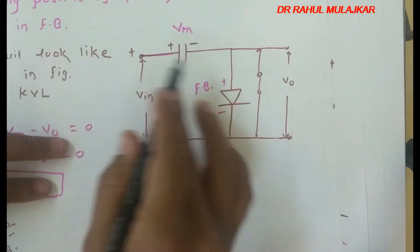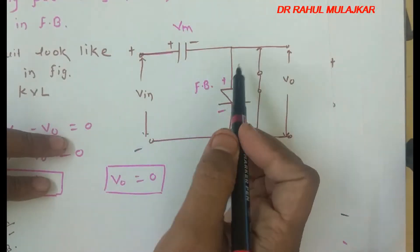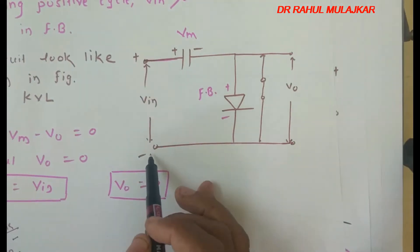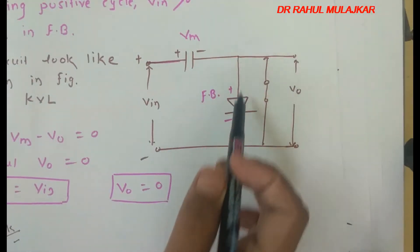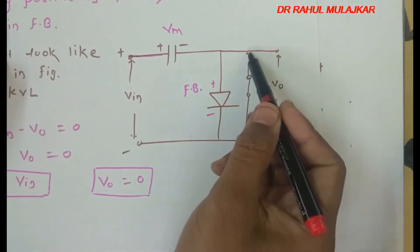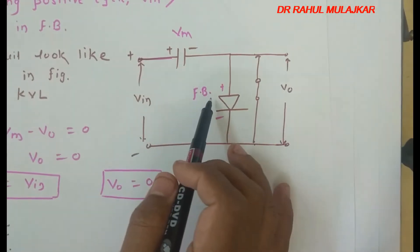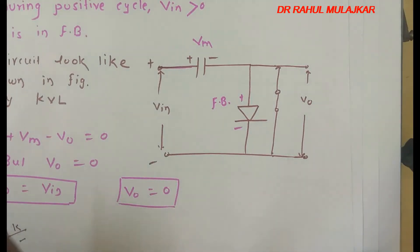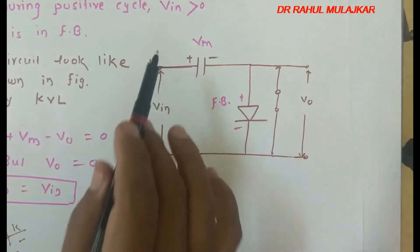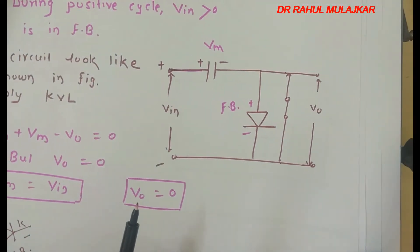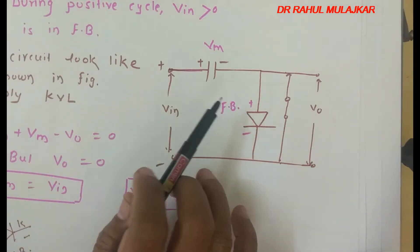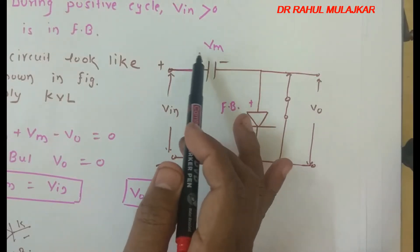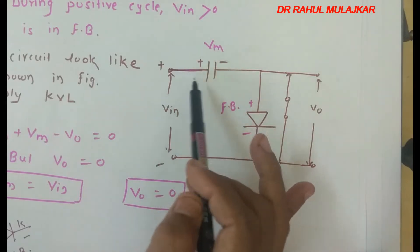In the negative clamper circuit, during the positive cycle the anode is positive with respect to cathode, so the diode is in forward bias. As the diode gets forward biased, the capacitor will start to charge. It is very important to note up to what extent this capacitor is charged. You should identify what voltage the capacitor charges to during forward bias.